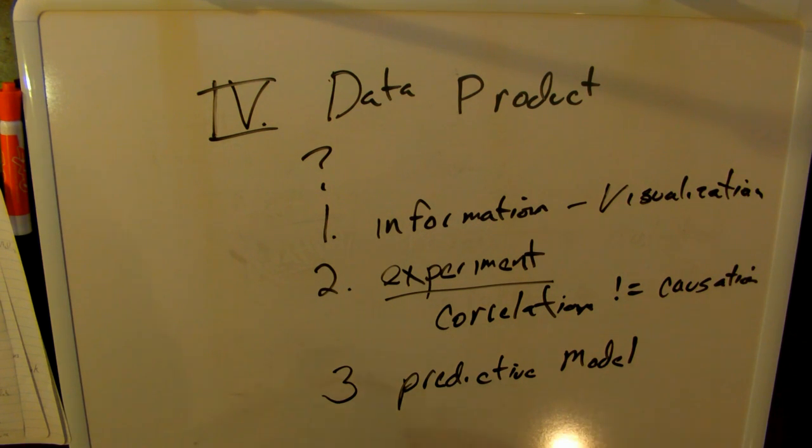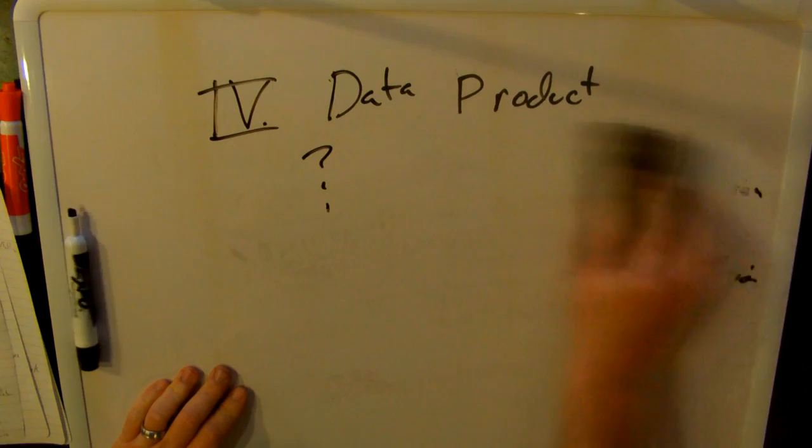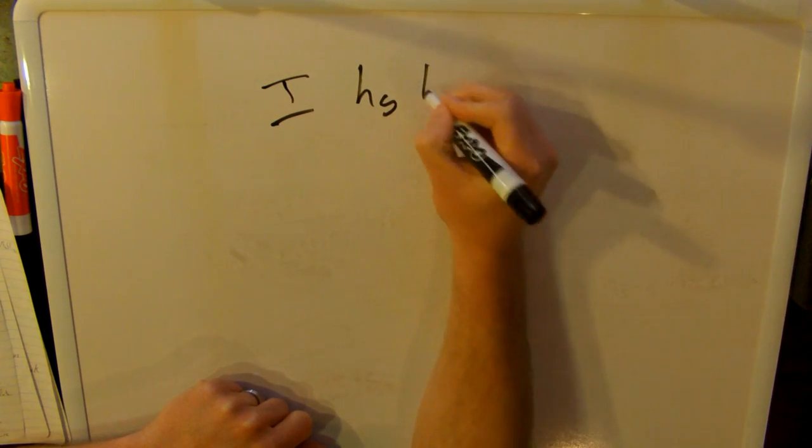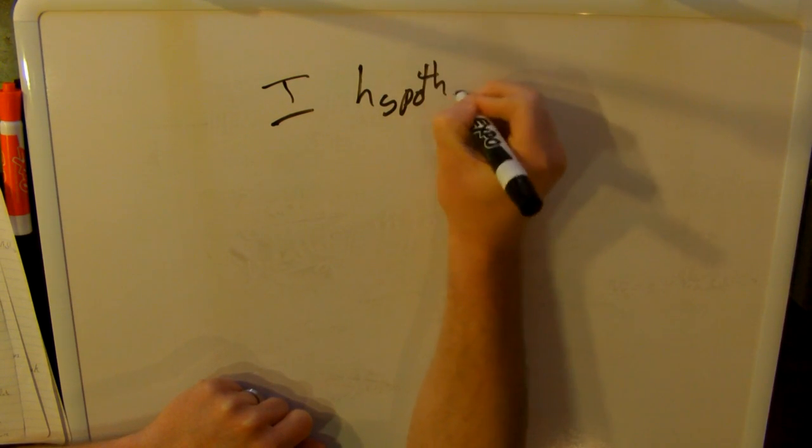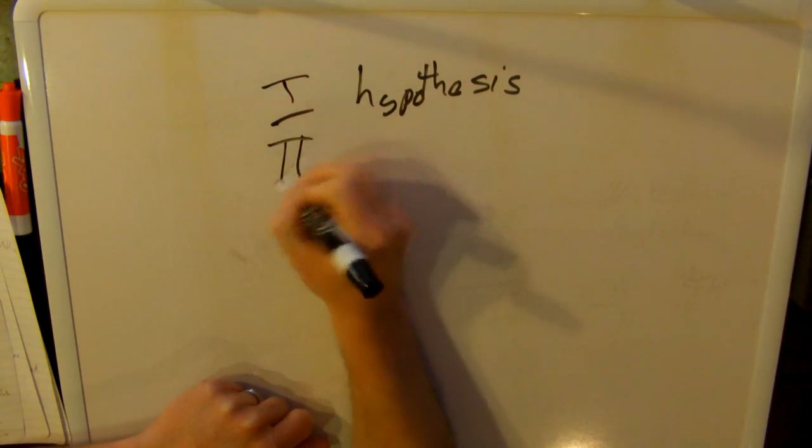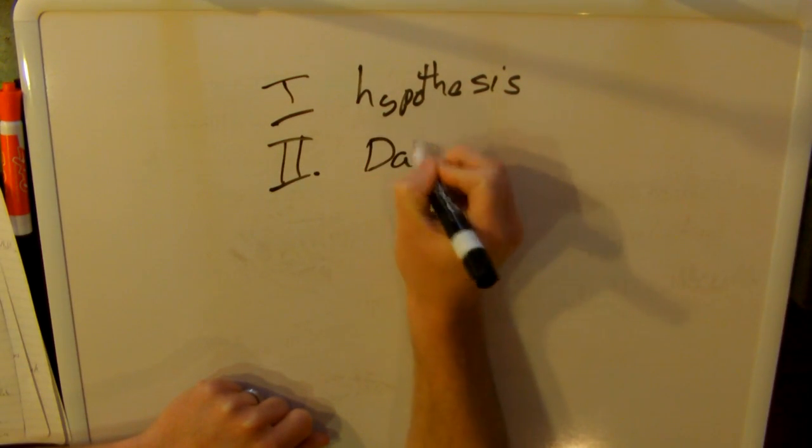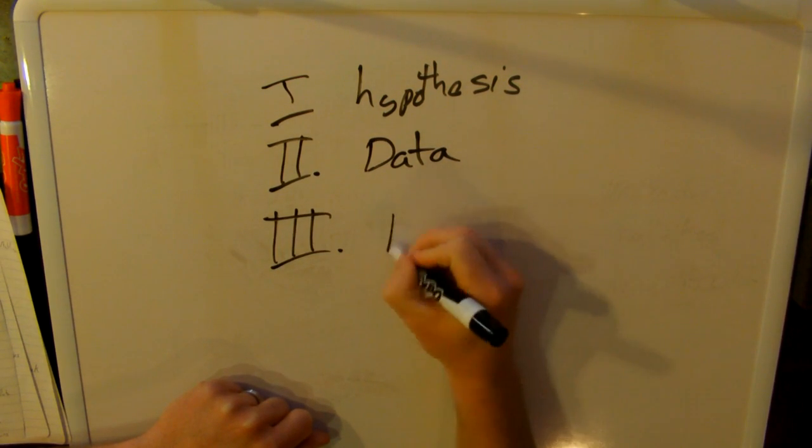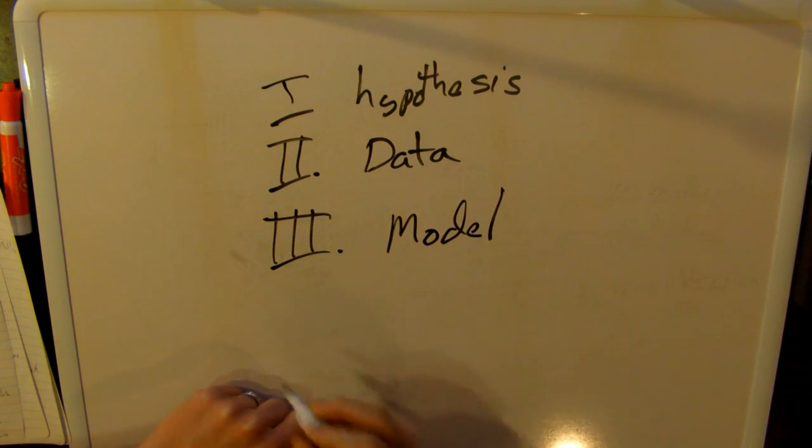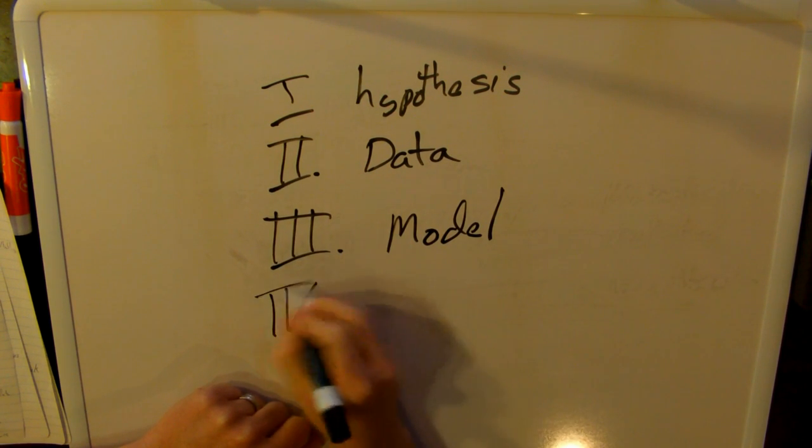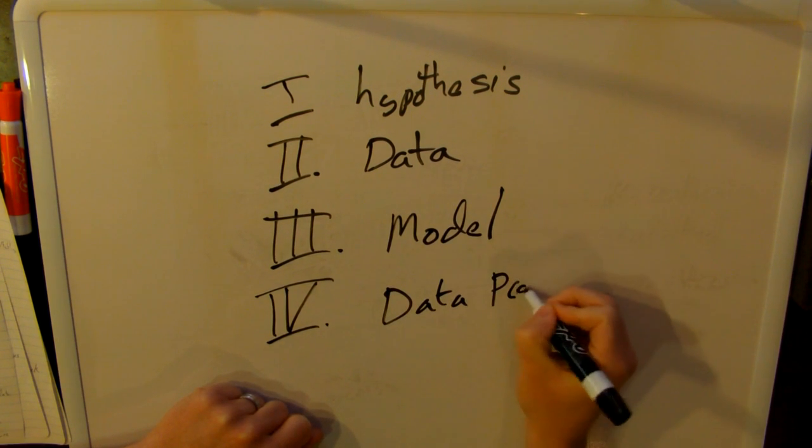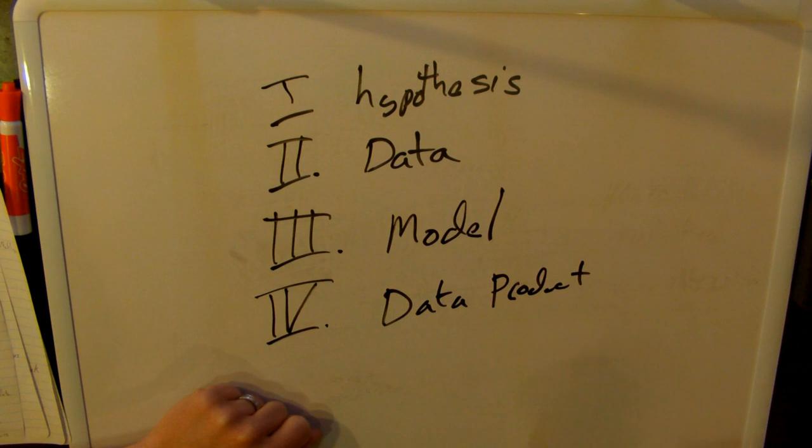So that's the data science lifecycle. And just to summarize one more time for you. It starts with a hypothesis. Then we need some data. We're going to model that data. And then lastly, we're going to create some data product.